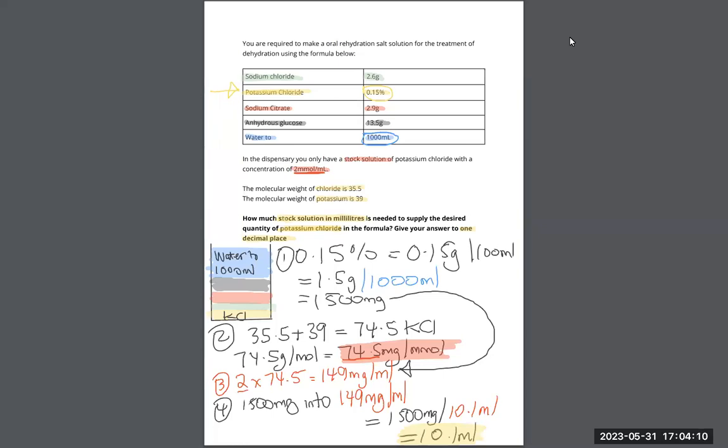We need to then use that and calculate it into 1500. So by doing that we'll get 1500 milligrams equals 10.1 mils. So that is our correct answer. Final check at the end: the answer is in milliliters, the answer is to one decimal place, therefore our answer is correct.